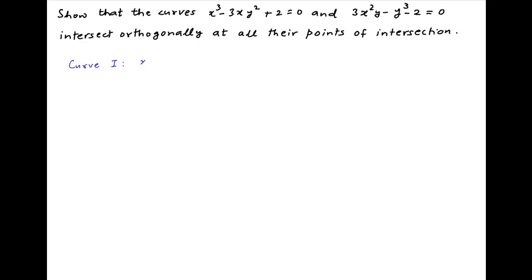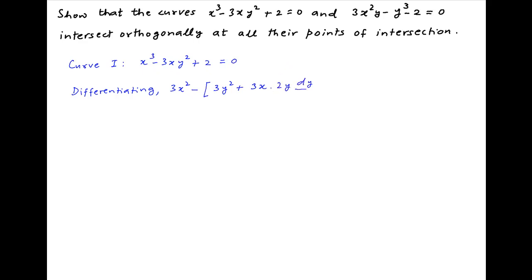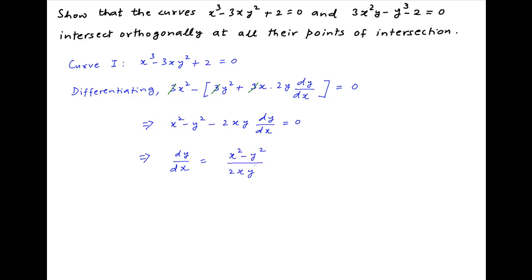We start with the first curve x cubed minus 3xy squared plus 2 is equal to 0. We differentiate with respect to x and get 3x squared minus, in the brackets, 3y squared plus 3x times the differential of y squared, which is 2y dy/dx, is equal to 0. This can be rearranged as x squared minus y squared minus 2xy dy/dx equals 0. Therefore dy/dx equals x squared minus y squared divided by 2xy.